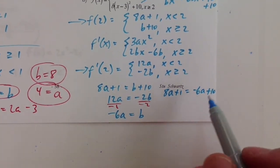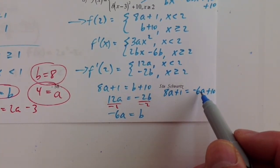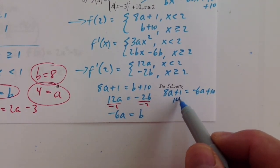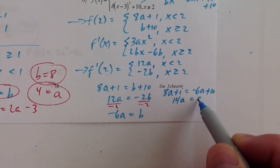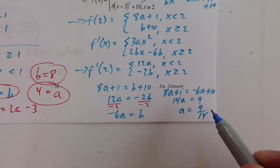8a plus 1 equals negative 6a plus 10, and we're going to have to do a little mental math here to fit it all in. So we have adding 6a to both sides, we're going to get 14a. Subtracting 1 from both sides, we're going to get equals 9. So a equals 9 over 14, and that's not a super convenient value for a, is it?